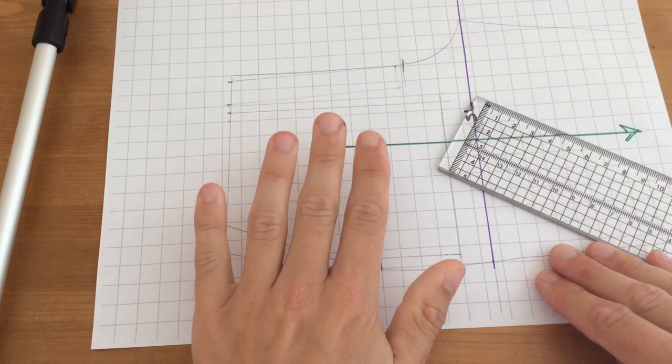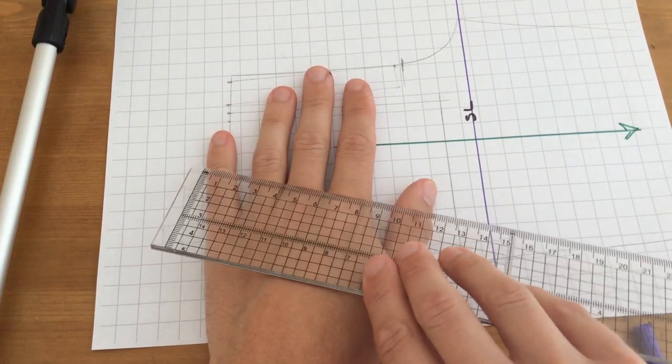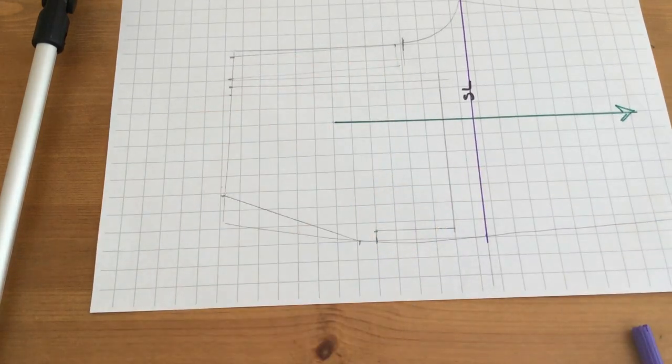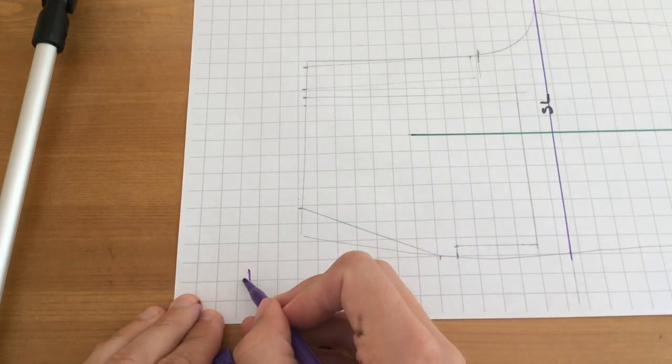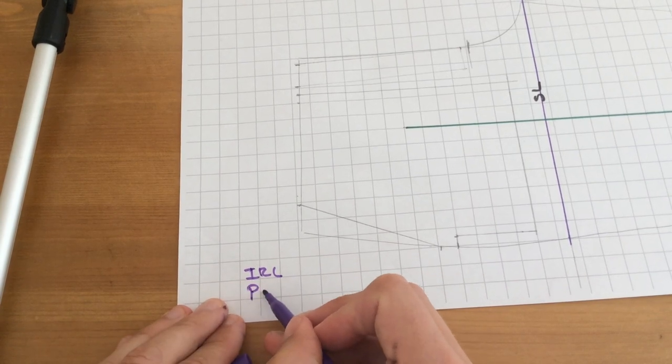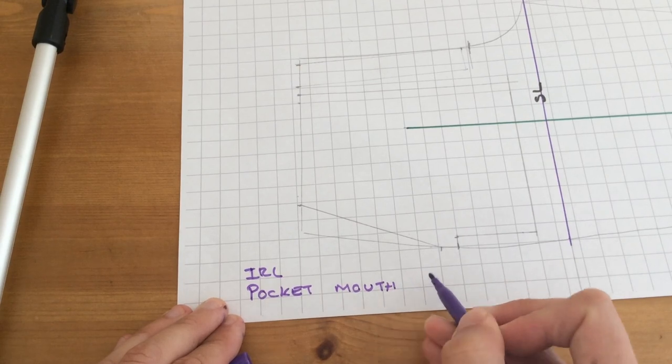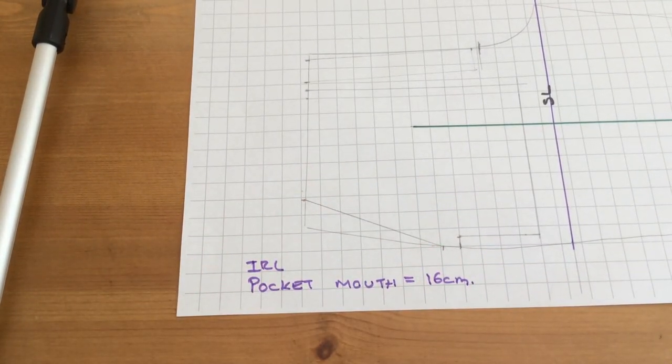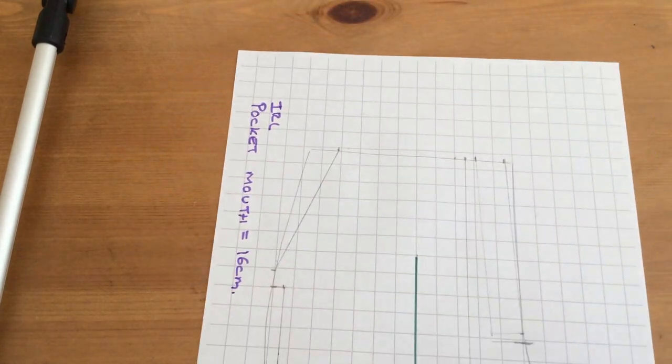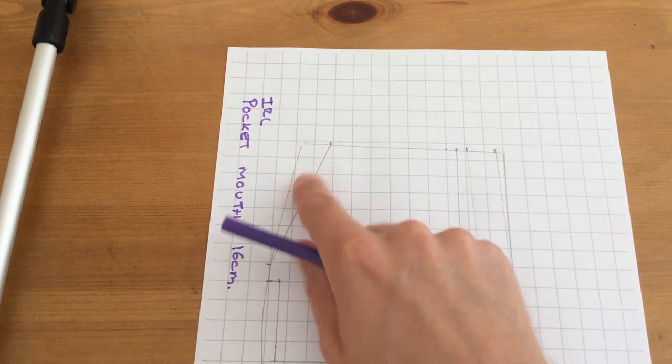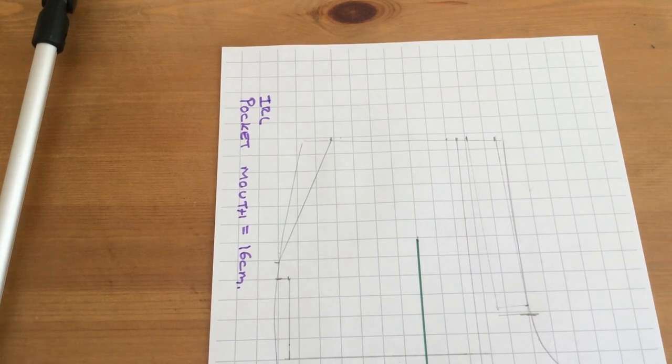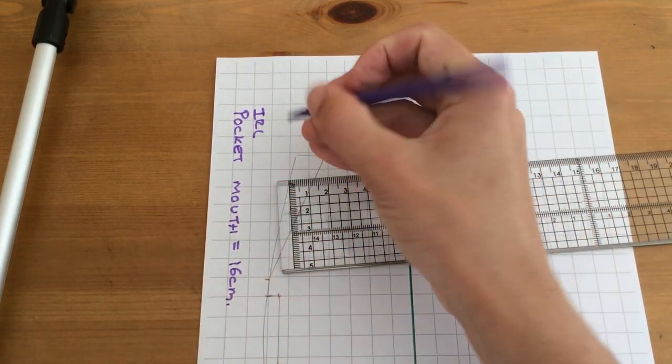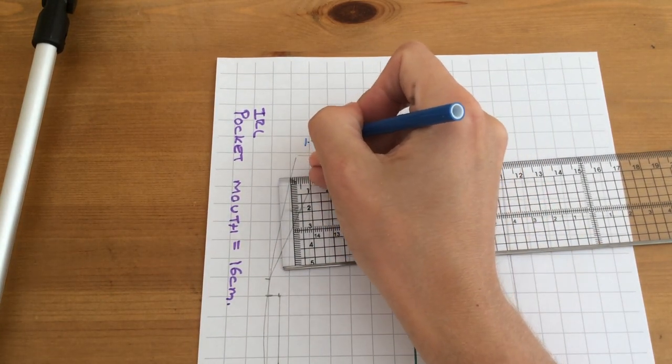We need to think about how wide the hand spread roughly is. The maximum measurement we're looking at here is about 16 in real life. So in real life the pocket mouth equals about 16 centimeters. That is the pocket mouth there. The slanted pocket is not coming from the side, it's coming a couple of centimeters in. We have to remember that we're working in quarter scale. So this measurement here is about 1.5 centimeters.